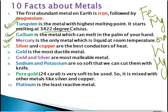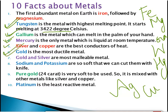The fifth fact about metals: silver and copper are the best conductors of heat. The symbol of silver is Ag and the symbol of copper is Cu.